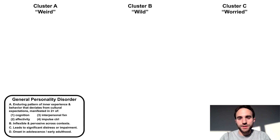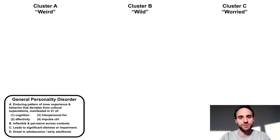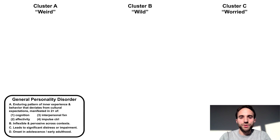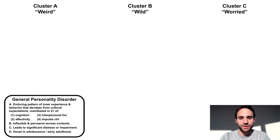Historically, personality disorders have been divided into three clusters based on common characteristics. Cluster A is considered the weird group because it includes diagnoses that involve eccentric behavior. Cluster B is the wild group because the diagnoses involve extreme affectivity. Cluster C is the worried group because the diagnoses involve significant anxiety. I'll describe the ten individual personality disorders, simplifying them each to only a few defining characteristics, and associating each with a different Winnie the Pooh character to help you distinguish them.